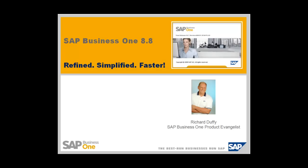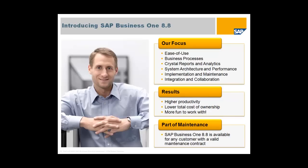We're going to talk about version 8.8, which is the latest release of SAP Business One — our solution for small and mid-sized enterprises. With version 8.8, we believe we've taken some significant steps to make this version refined, simplified and faster. So let's go ahead and look at exactly what we've done.